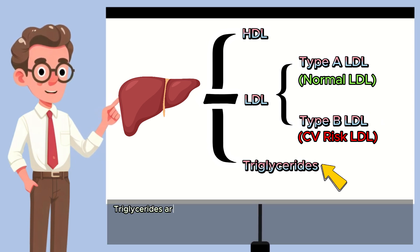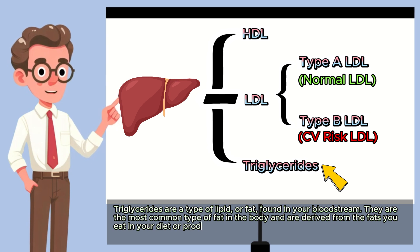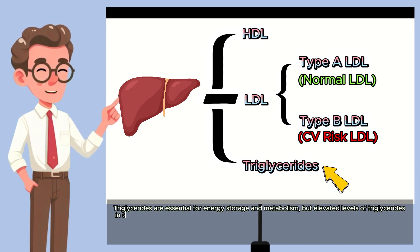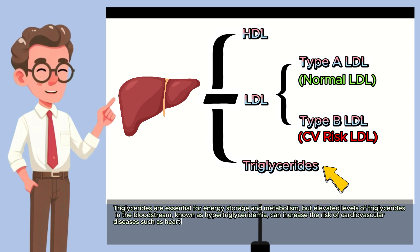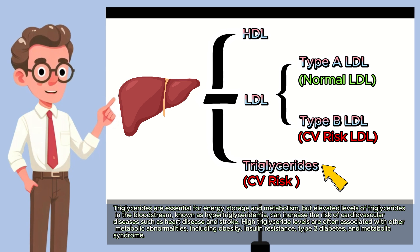Lastly, triglycerides. Triglycerides are a type of lipid or fat found in your bloodstream. They are the most common type of fat in the body and are derived from the fats you eat in your diet or produced by your liver from excess calories. Triglycerides are essential for energy storage and metabolism, but elevated levels, known as hypertriglyceridemia, can increase the risk of cardiovascular diseases such as heart disease and stroke. High triglyceride levels are often associated with metabolic abnormalities including obesity, insulin resistance, type 2 diabetes, and metabolic syndrome.